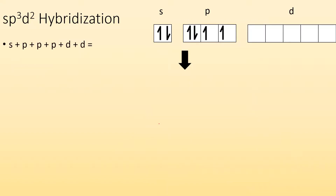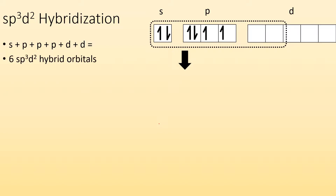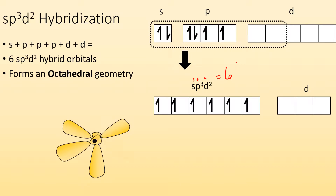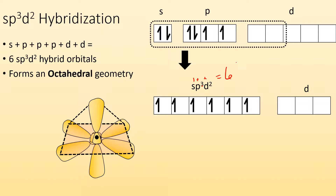For sp3d2, that would be one s, three p's, and two d orbitals hybridized, giving six sp3d2 hybrid orbitals. A quick trick: s gives one, plus three p's, plus two d's gives six hybrid orbitals total. The geometry for this hybridization would be octahedral. With six orbitals around the nucleus repelling each other, you end up with an octahedron — a square equator with a north and south pole, giving eight faces: octahedral.